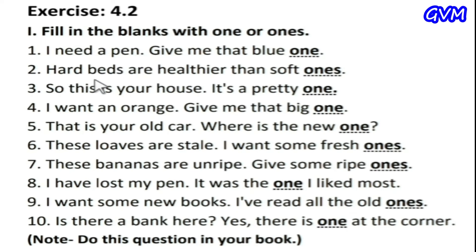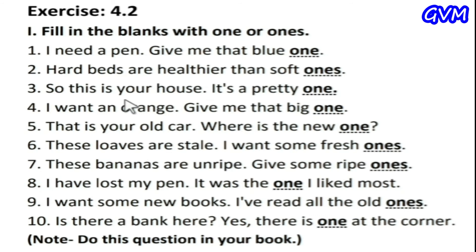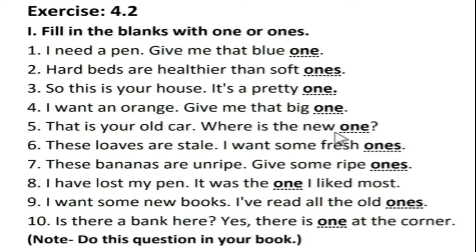Second: 'hard bats are healthier than soft ___' — the correct answer is 'ones' because 'bats' is plural, and 'ones' is the plural of 'one'. Third: 'so this is your house, it is a pretty one' — we use 'one' because 'house' is singular. 'I want an orange, give me that big one.' 'That is your old car, where is your new one?' 'These loaves are stale, I want some fresh ones.'